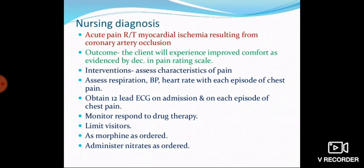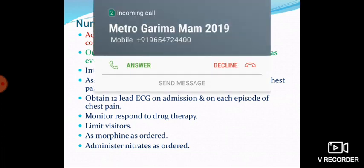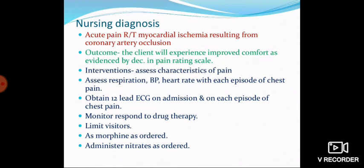Nursing diagnosis and management: First — acute pain related to myocardial ischemia from coronary artery occlusion. Outcome: the client will experience improved comfort as evidenced by decreased pain rating. Interventions: assess characteristics of pain; assess respiration, blood pressure, and heart rate with each episode of chest pain; obtain a 12-lead ECG on admission and with each pain episode; monitor response to drug therapy; limit visitors; administer morphine and nitrates as ordered.